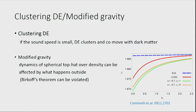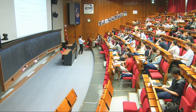Extending this technique to more complicated theories is difficult, but it can be done for clustering dark energy. In the clustering dark energy case, dark energy clusters as well — if the sound speed is very small, you cannot distinguish dark energy from dark matter. You can compute the effect on the collapse density as a function of sound speed. Changing the sound speed changes the prediction for the collapse density — a way to understand nonlinear effects in clustering dark energy. Modified gravity is more complicated because the Birkhoff theorem does not hold: you have to worry about what happens outside the spherical shell, not just inside.